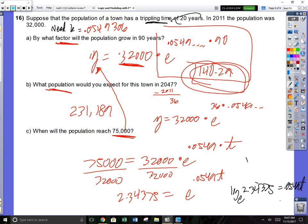The only way to undo the base of e is to change it to a log. It is going to be log base e of 2.34375, and that will equal your exponent, 0.0549t. Change this to a decimal in your calculator. Solve for t. Divide by 0.0549, divide this number by 0.0549. The time is going to equal like 15 and a half years. That is it.